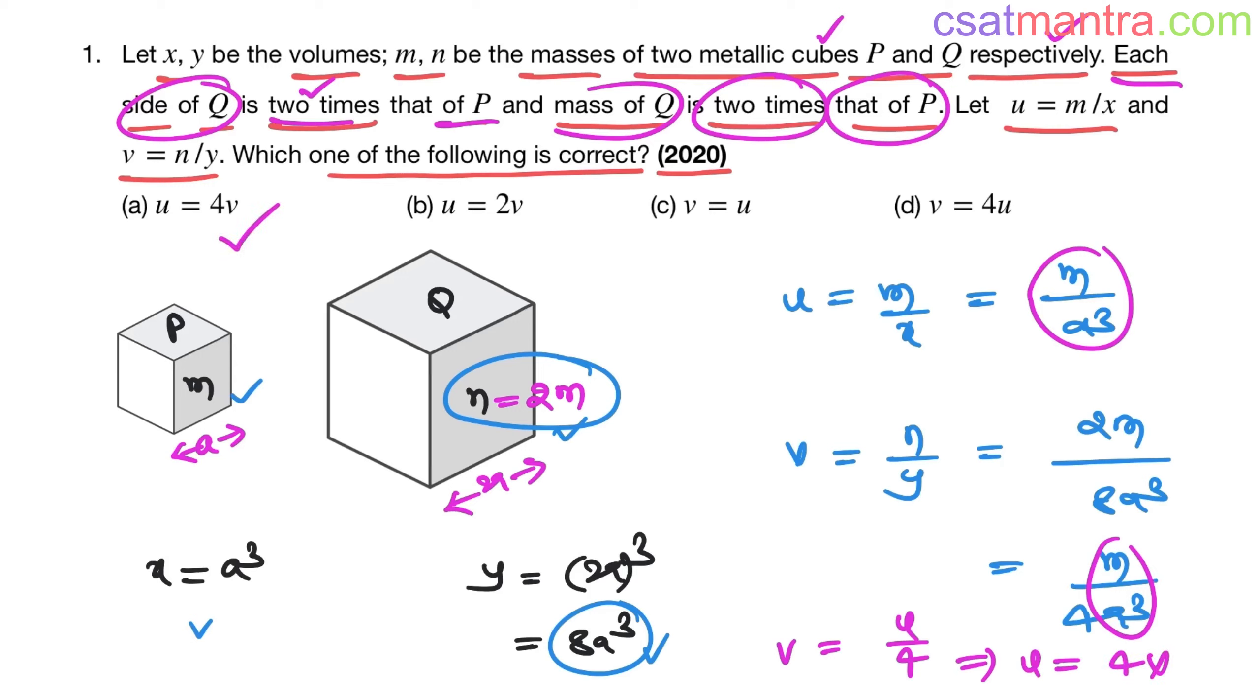Now, those who have given 2020 prelims, if you have left this problem without even attempting or trying, please ask yourself, there is no rocket science here. You just have to know the volume formula of a cube, nothing more. Then substitute these values and you are done. This is all it takes to solve this problem.